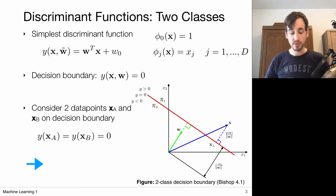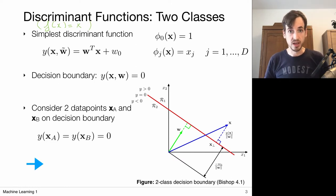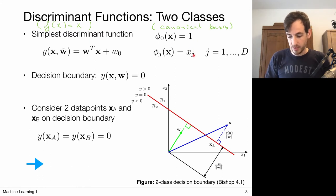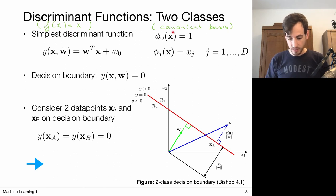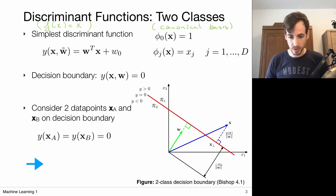Let's look at a very simple version of a generalized linear model. We take a simple choice: the activation function is going to be the identity, so we're not activating anything, just passing the information through. We also work with the standard canonical basis, meaning the feature vectors are really the components of the input vector prepended with a one. So W transposed with this vector gives the linear form we've seen many times already.